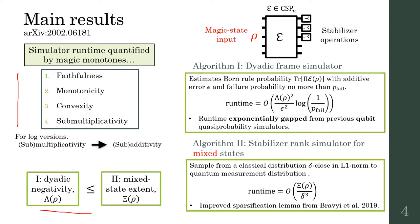This runtime is exponentially gapped from previous qubit quasi-probability simulators. The second simulator is the stabilizer rank simulator extended to mixed states. This allows simulated sampling from the output distribution of a quantum circuit, and runtime is again given by a monotone, the mixed state extent. In the process of extending this technique to the density operator picture, we obtain significant improvement in performance.